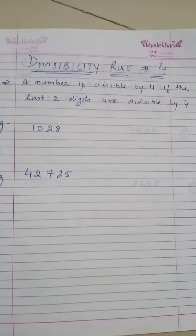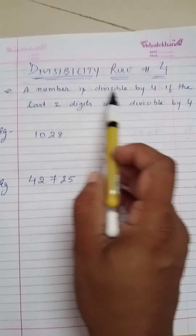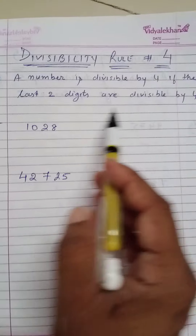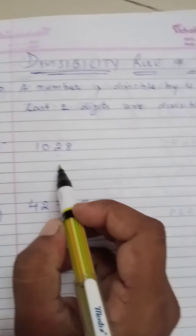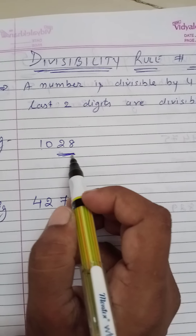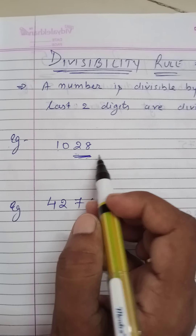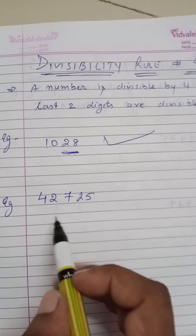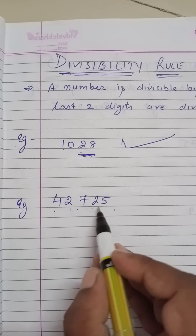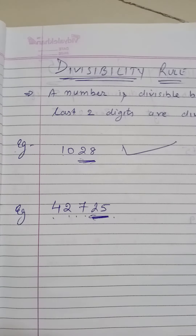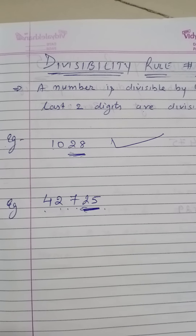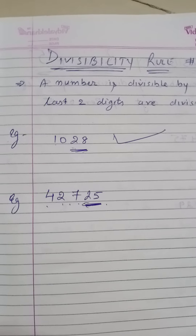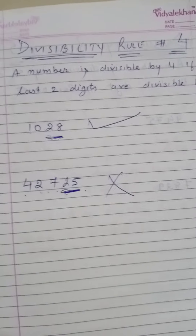Now the divisibility rule of 4: a number is divisible by 4 if the last 2 digits are divisible by 4. For example, 1028 — the last 2 digits are 28, and 28 is certainly divisible by 4 (4 × 7 = 28), so this number is divisible by 4. Whereas for 42725, the last two digits are 25 which does not fall in the table of 4, hence 42725 is not divisible by 4.